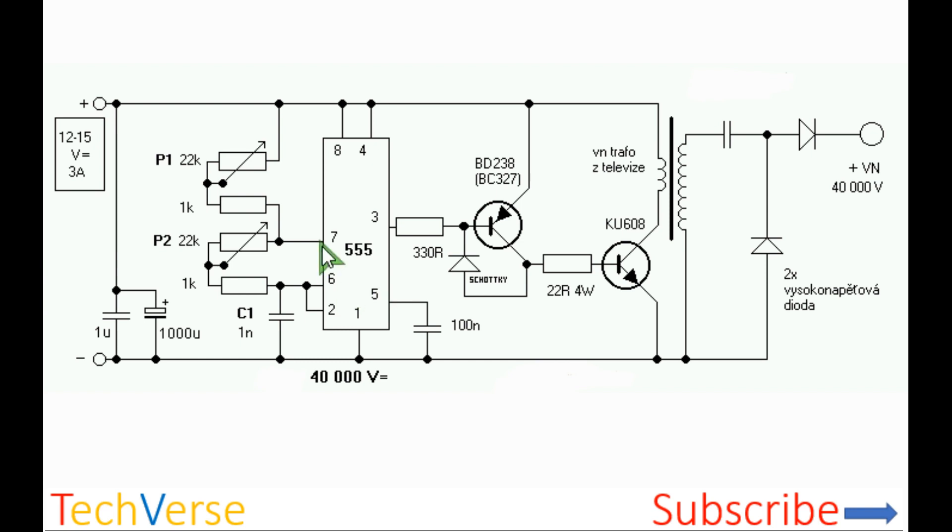The timer is configured as an astable multivibrator, and the frequency can be changed by adjusting the potentiometers P1 and P2. The values are shown, and the timing capacitor is 1 nanofarad.